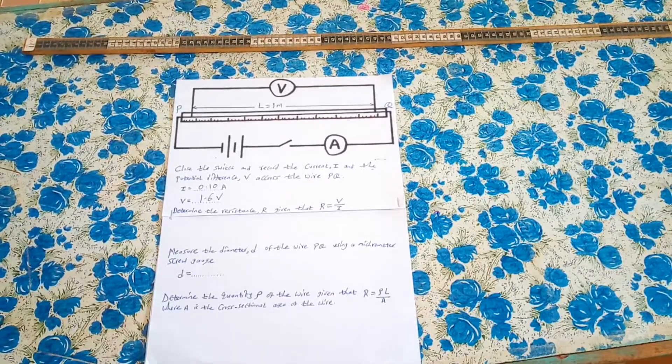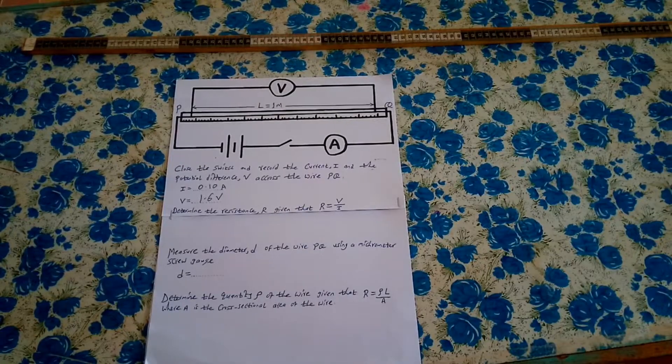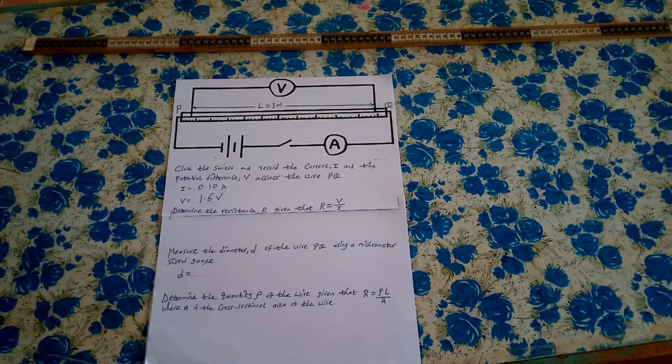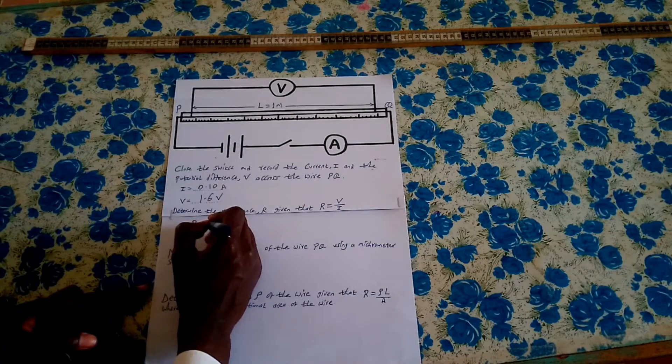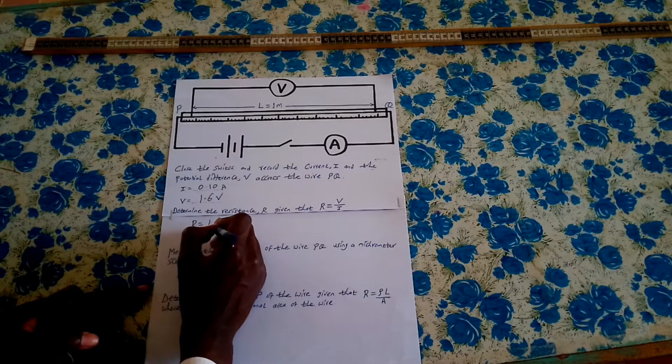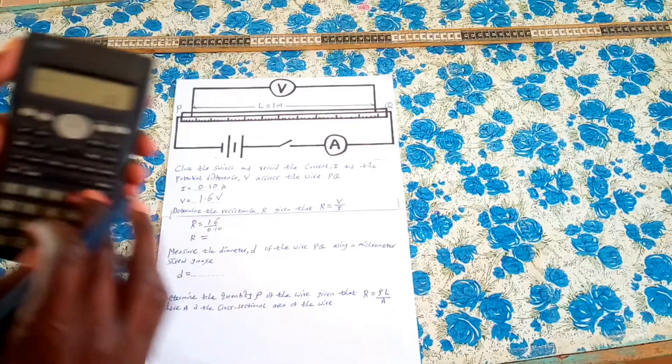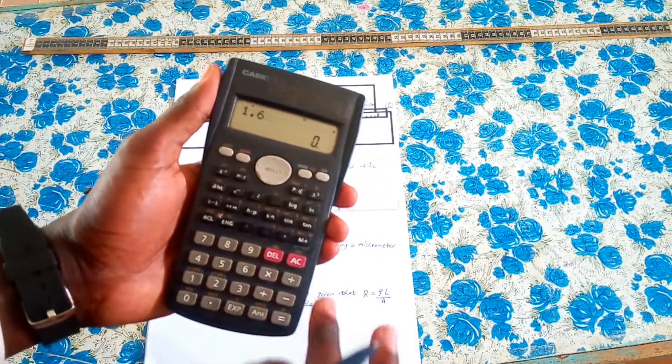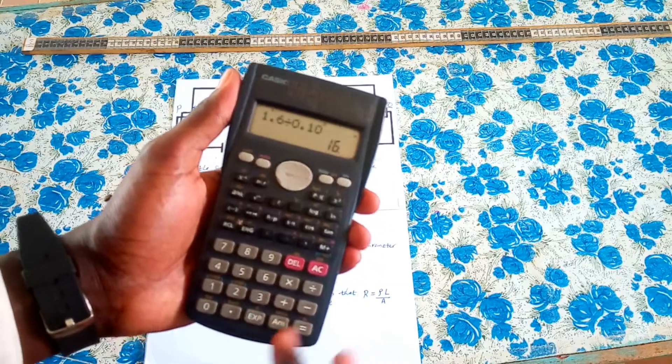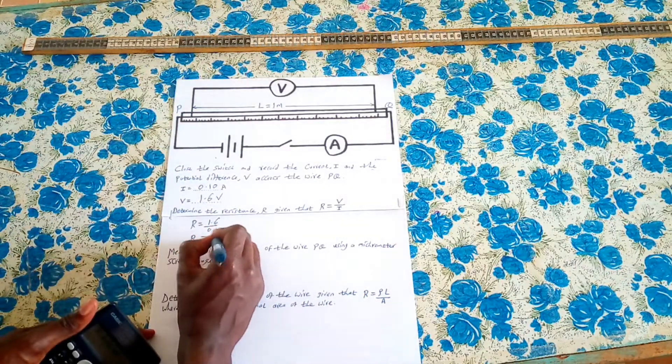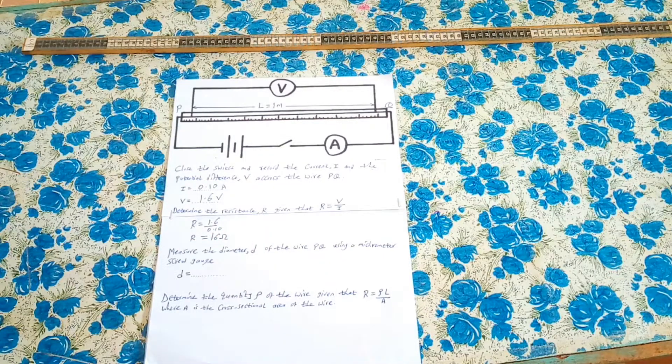Using the values we have obtained, we first get the resistance V over I. So that means resistance will be 1.6 divided by 0.10, and that means 1.6 divided by 0.10, that is 16 ohm. That is the resistance of that nichrome wire.